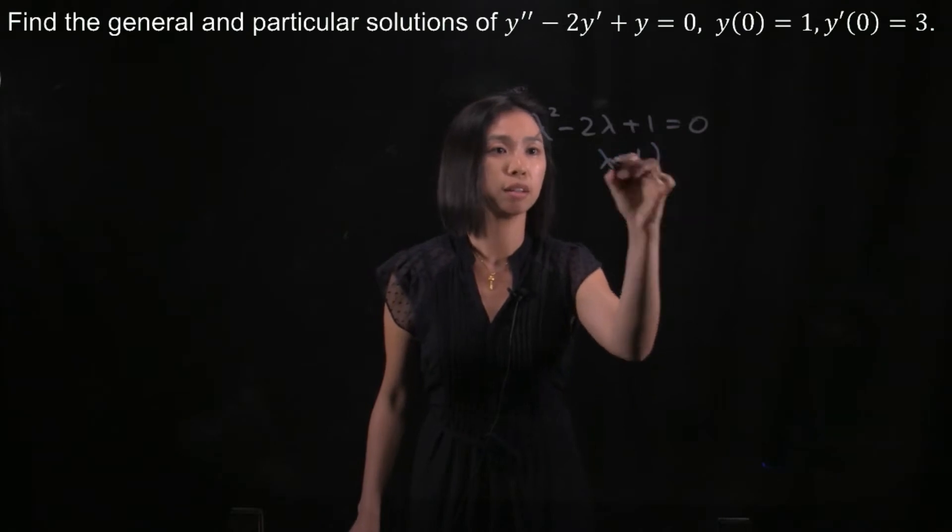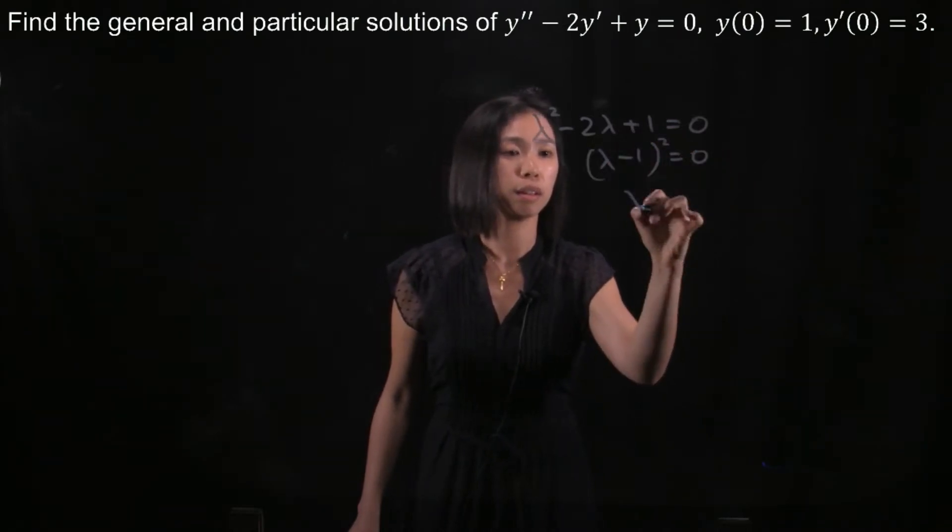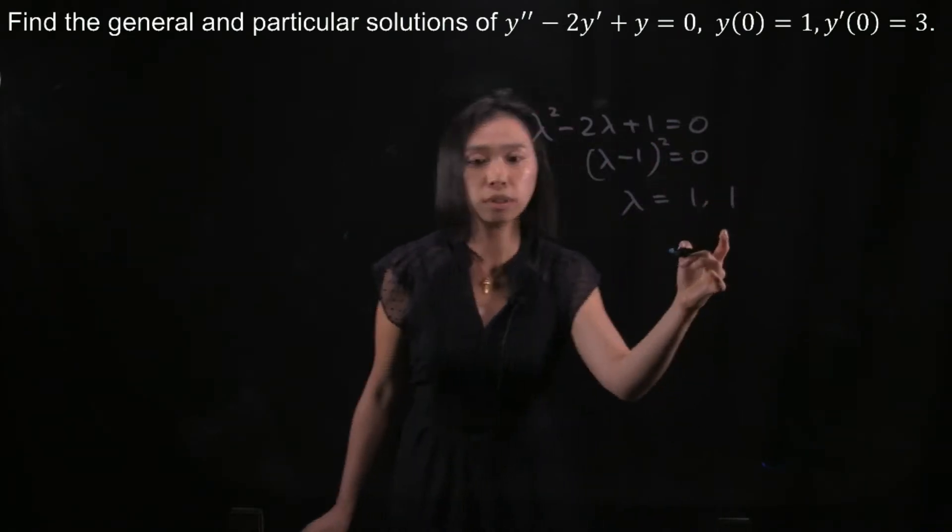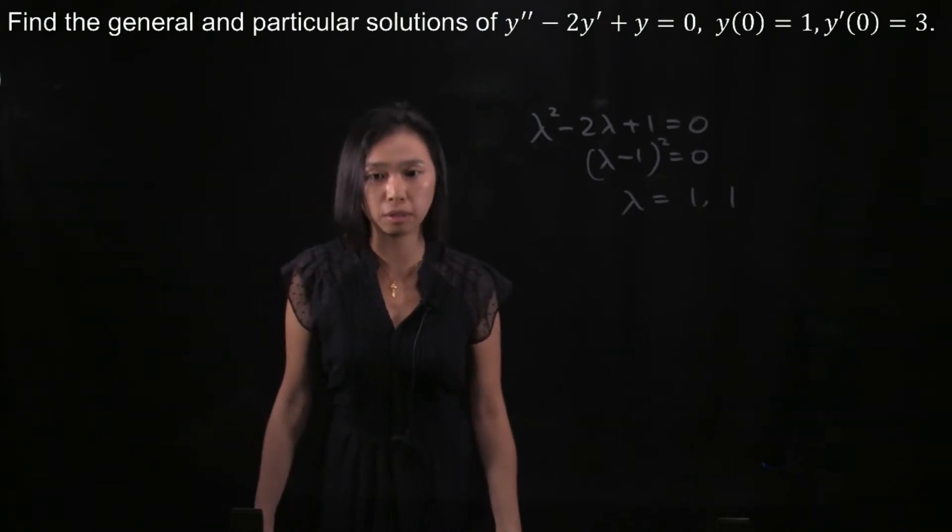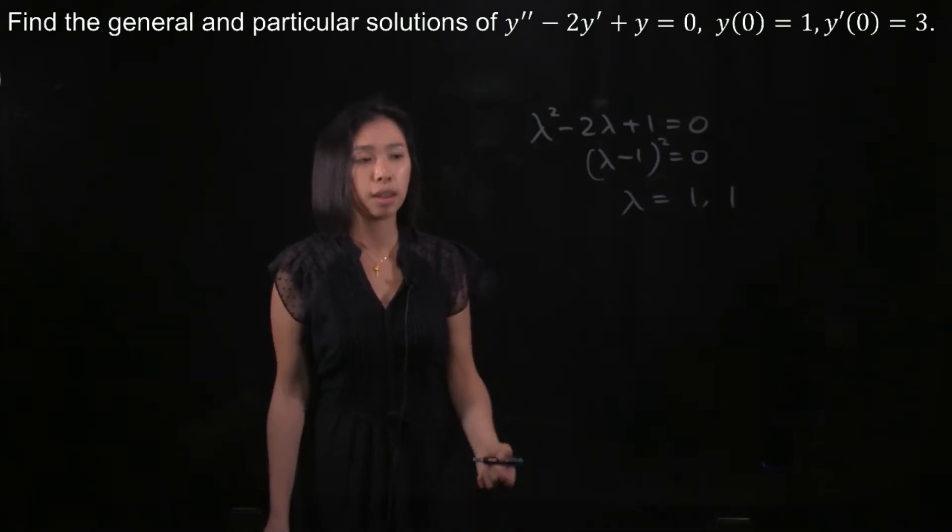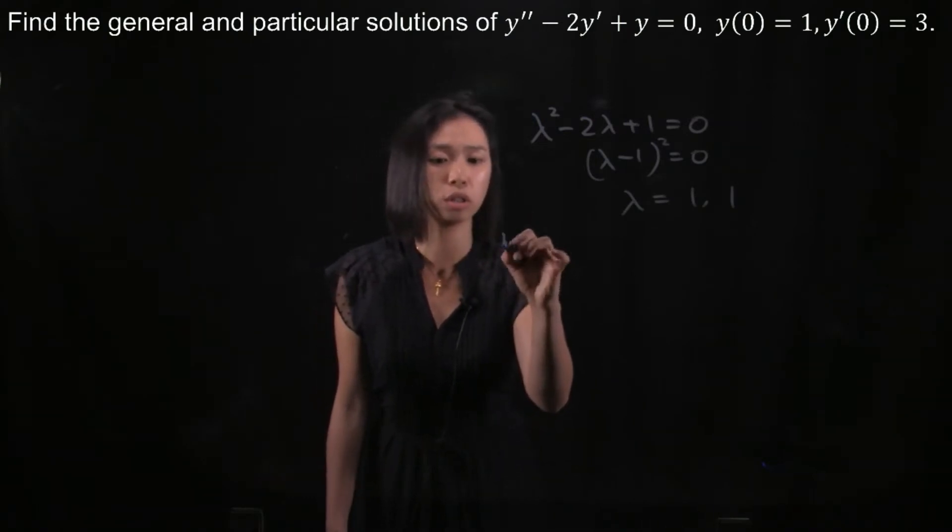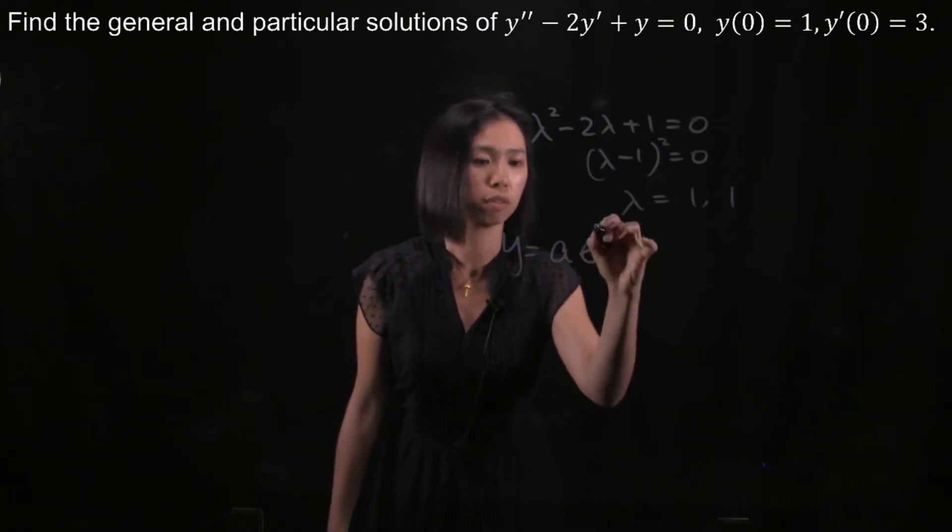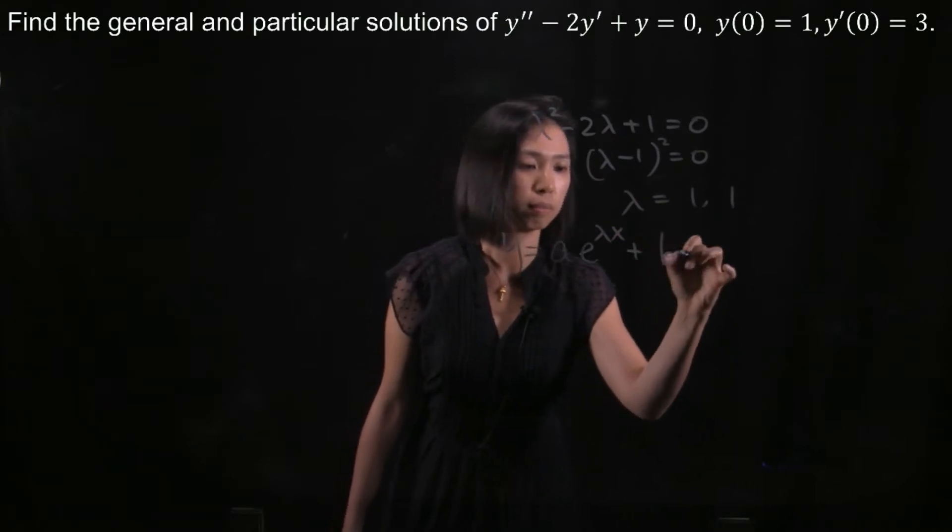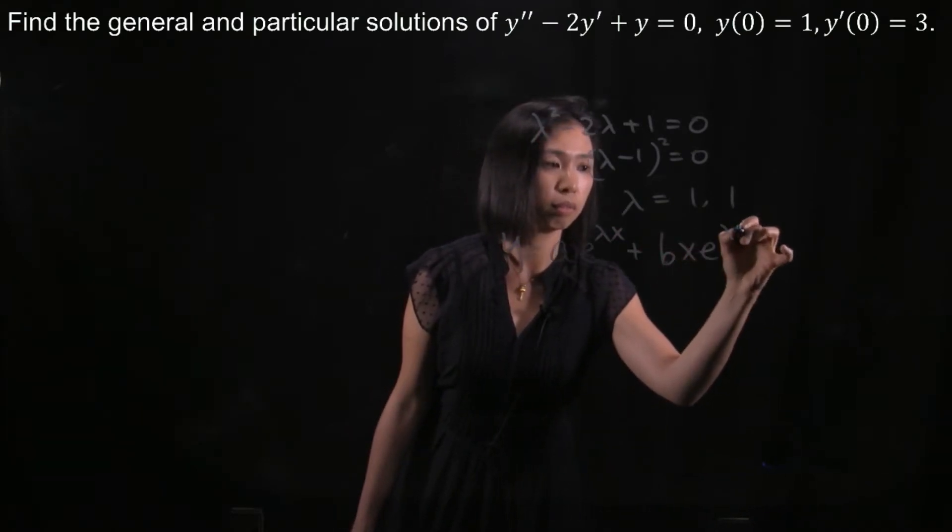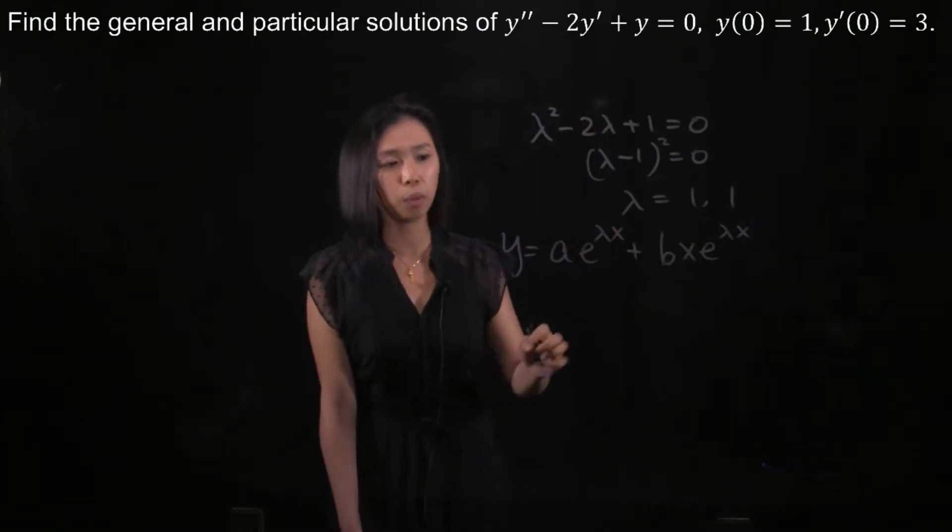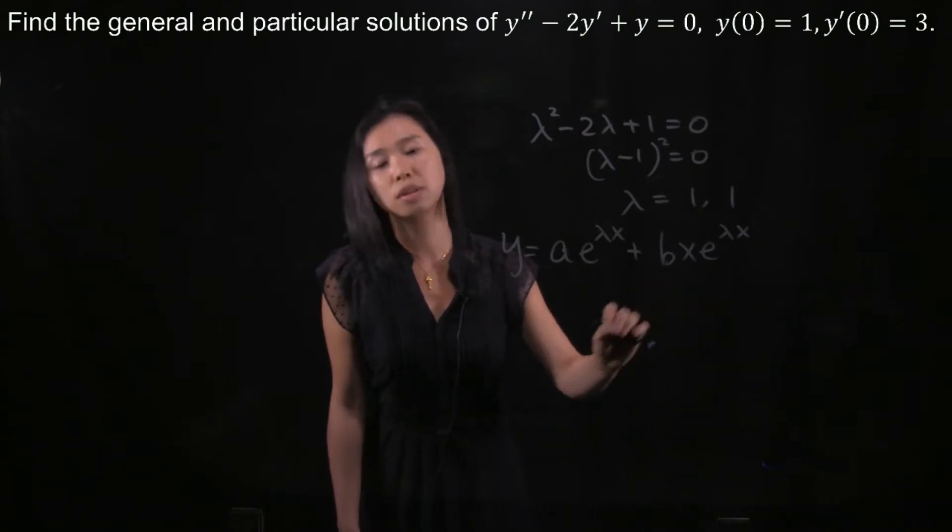And then we factorize it and solve it. We notice that lambda is a repeated root or double root. Then we can write down the general solution to this differential equation. We notice that we have two terms here for the solution.